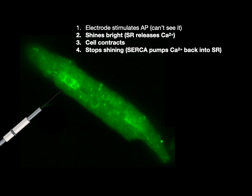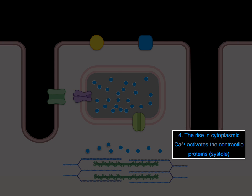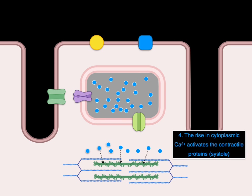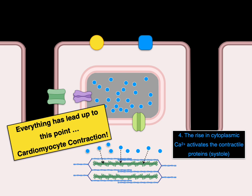Isn't that amazing? Thank you, Dr. Spitzer for this. The rise in cytoplasmic calcium activates the contractile proteins and you get systole. The calcium binds to the troponin-tropomyosin complex, moves it out of the way, and the myosin and actin contract. Everything has led up to this point — this is cardiomyocyte contraction, this is systole, the pumping of the heart, the contraction that pumps blood.